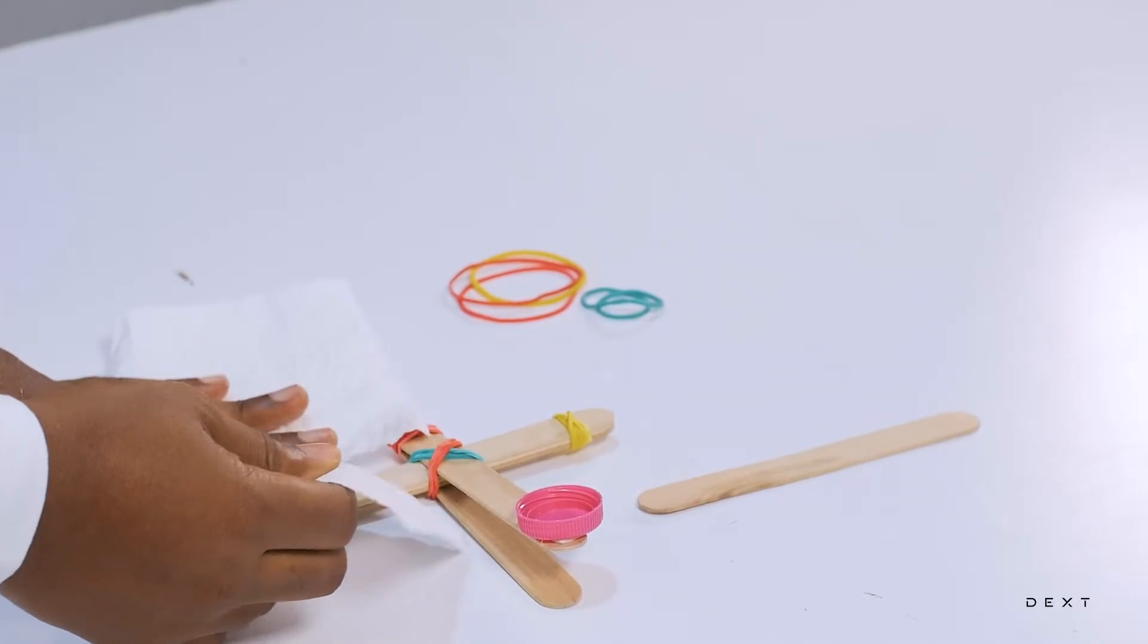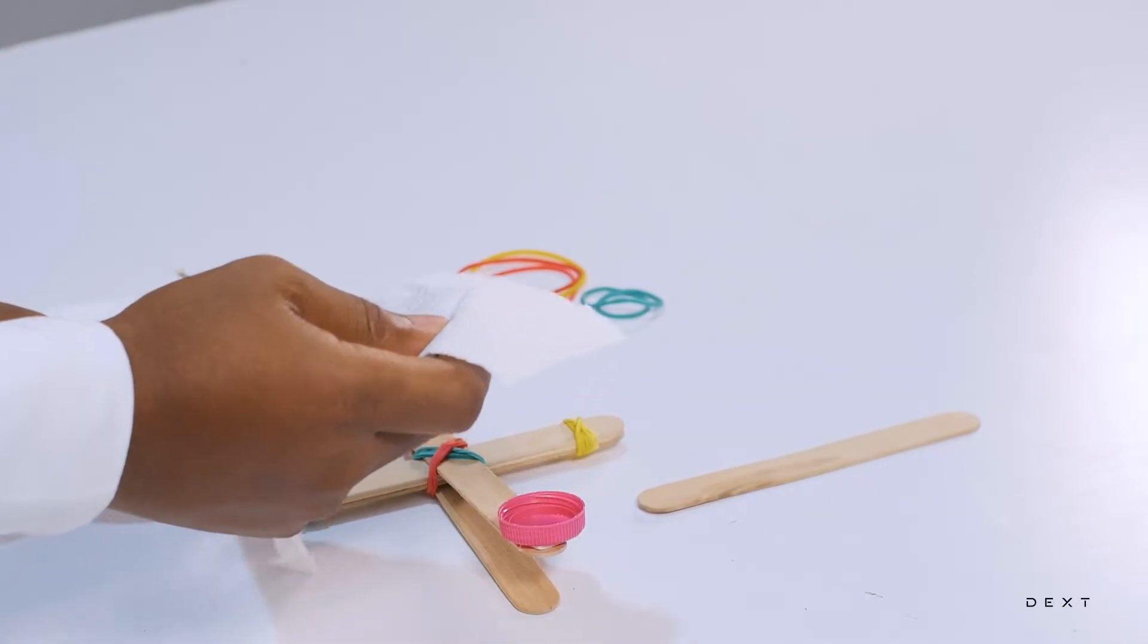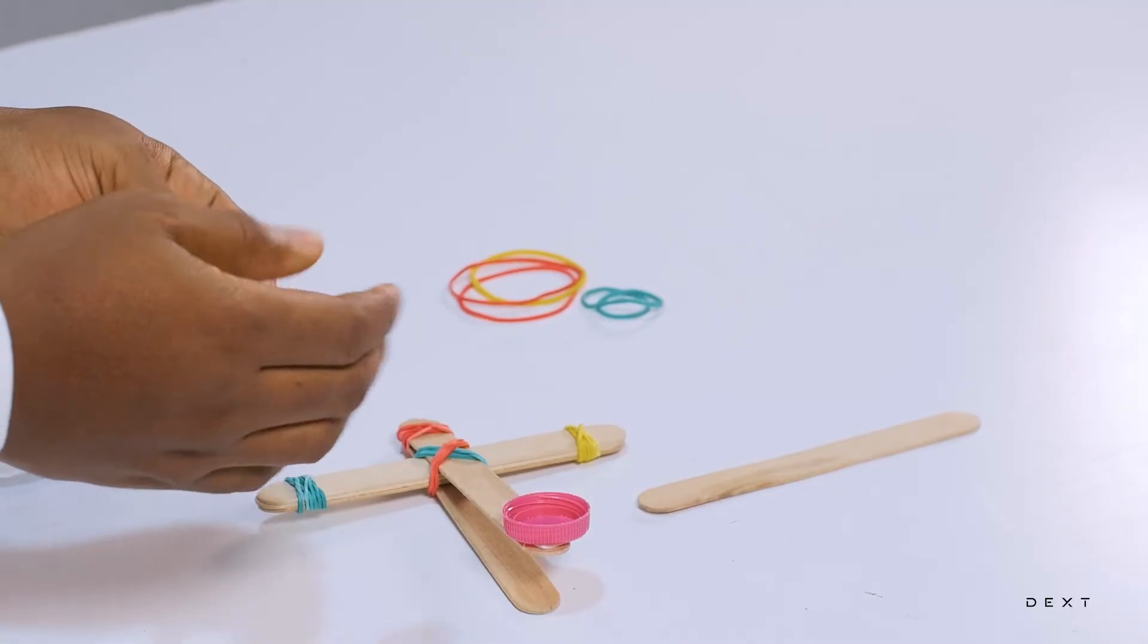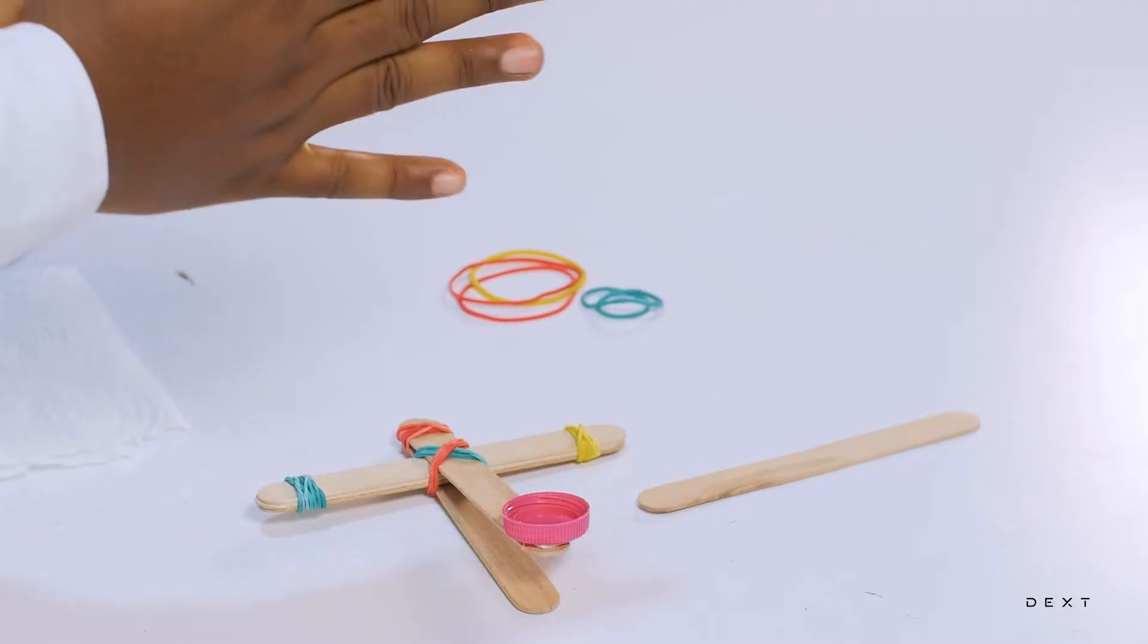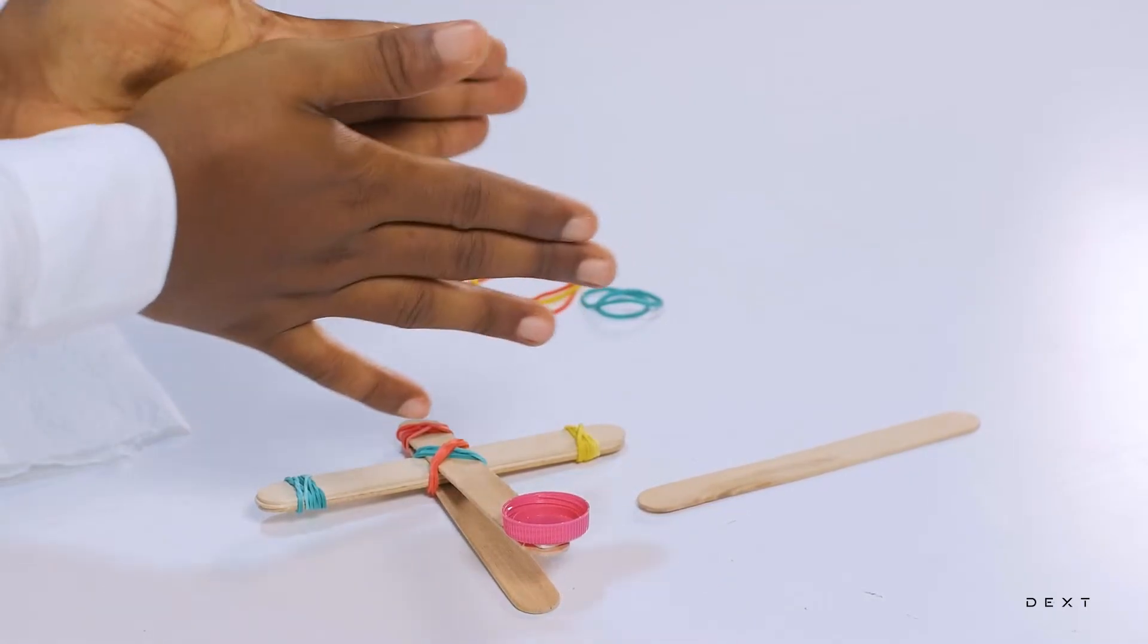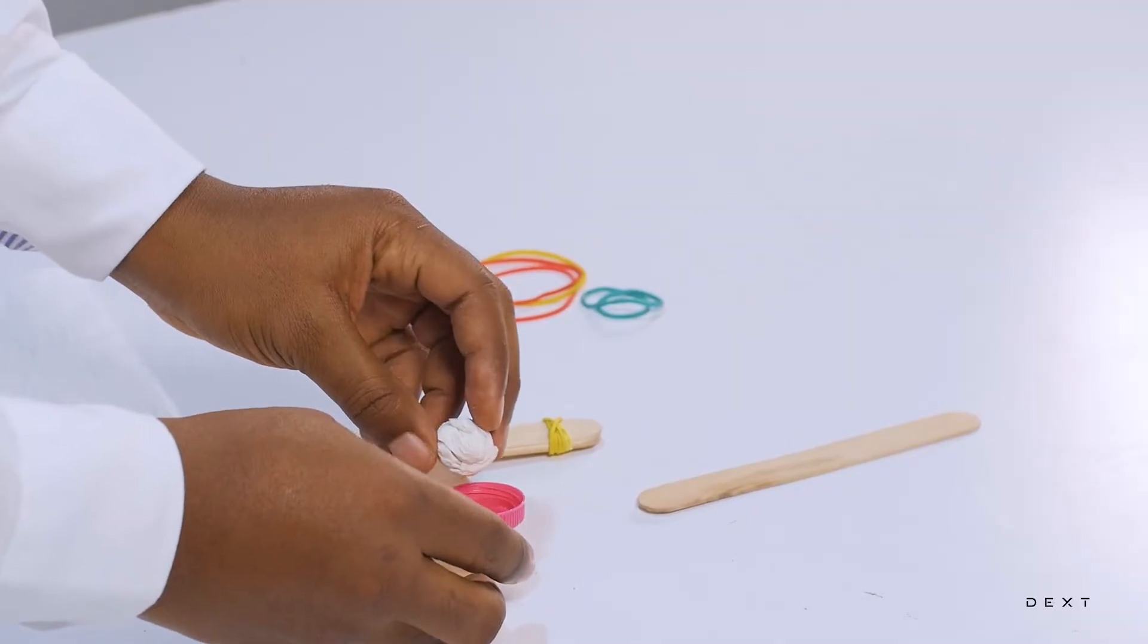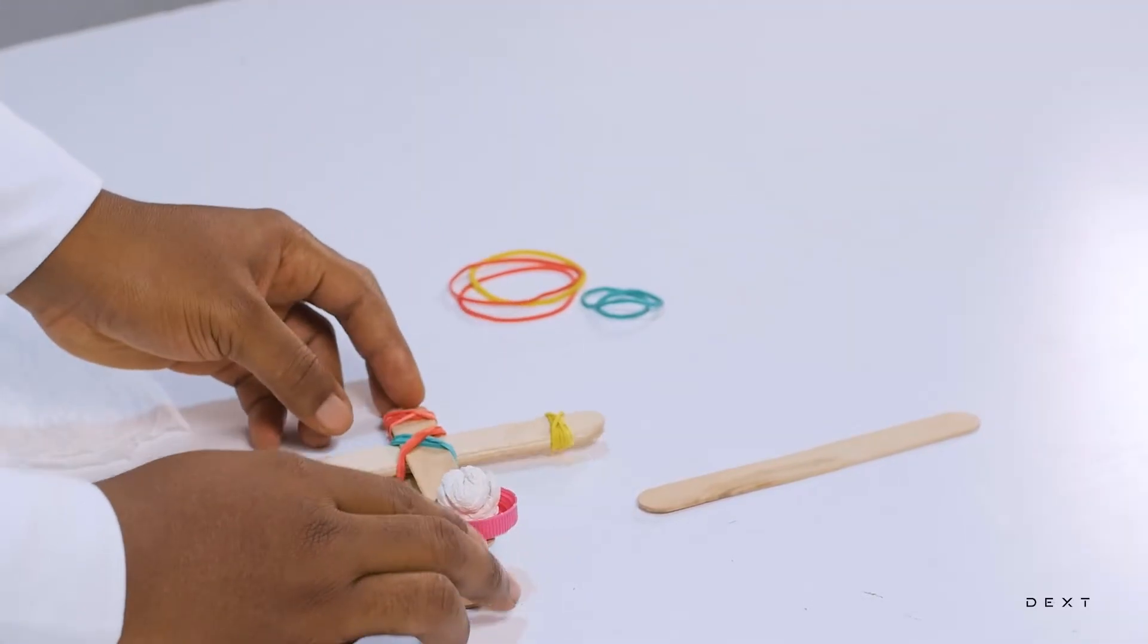Once you are done here, you can get some tissue and roll that into a nice ball that we can put inside the catapult.